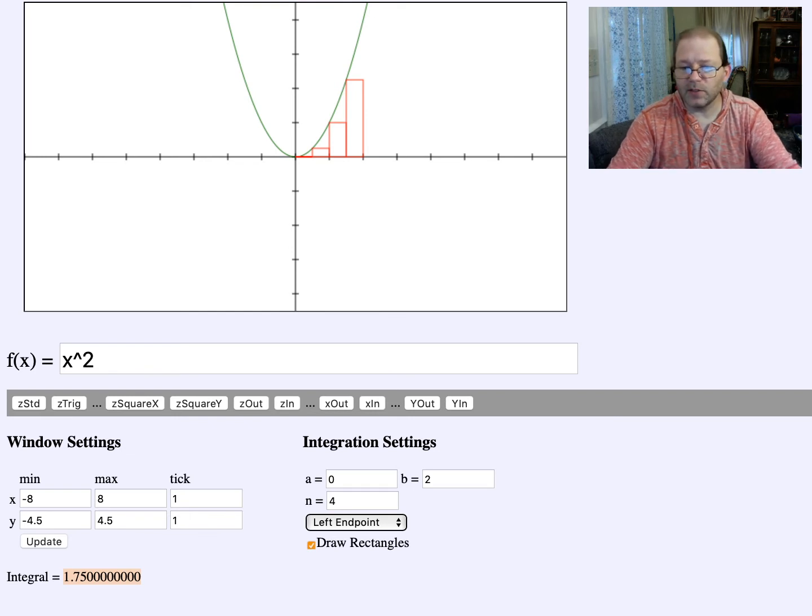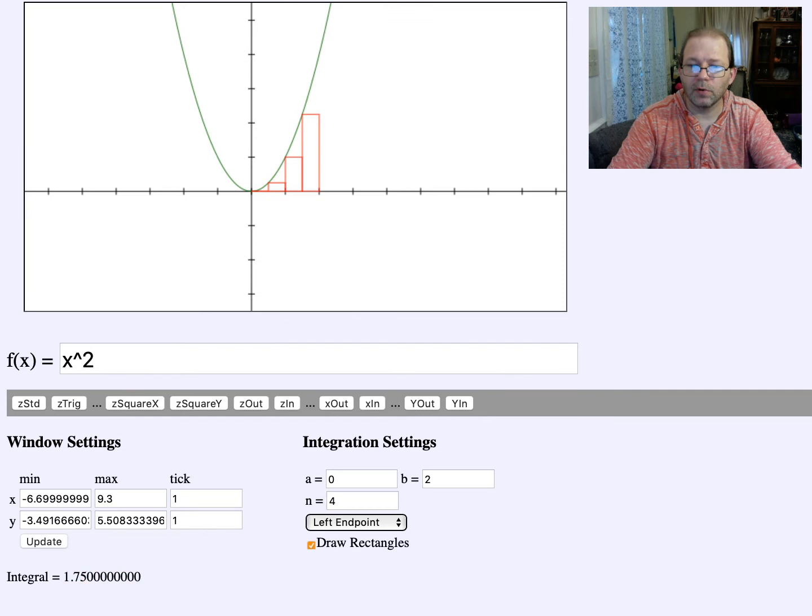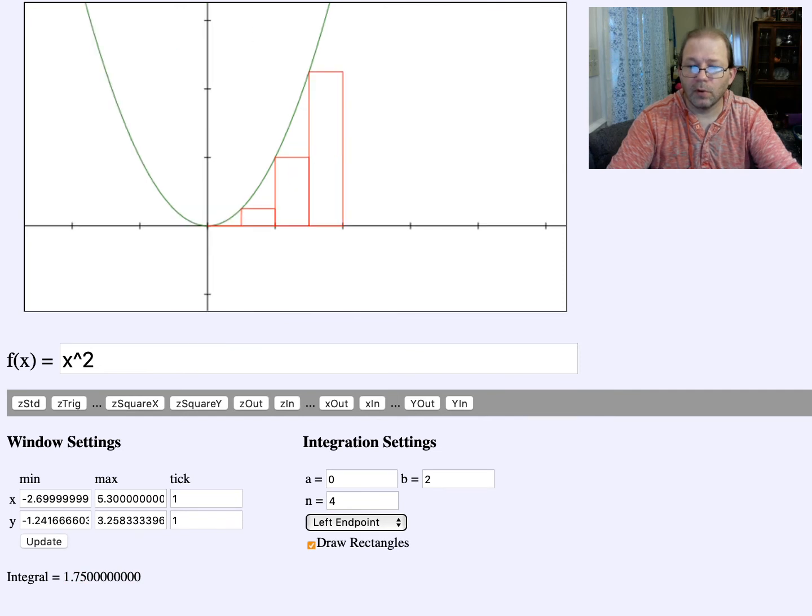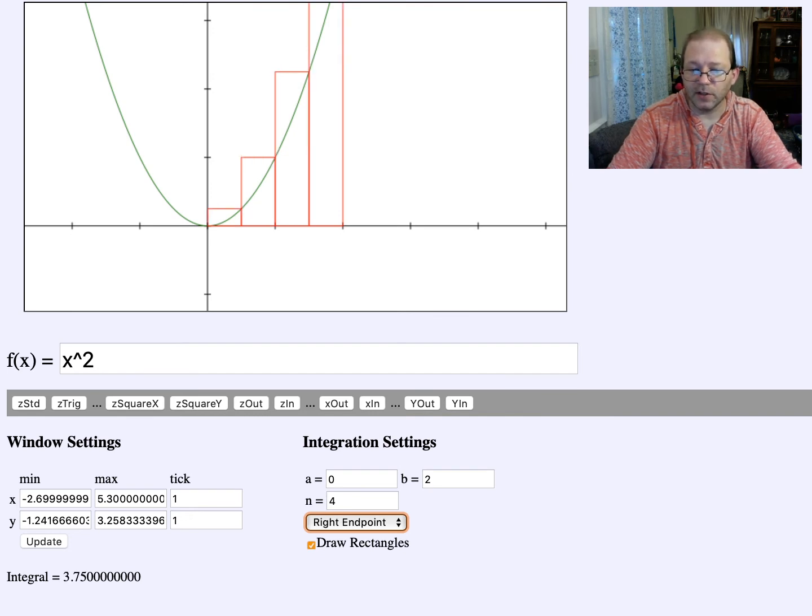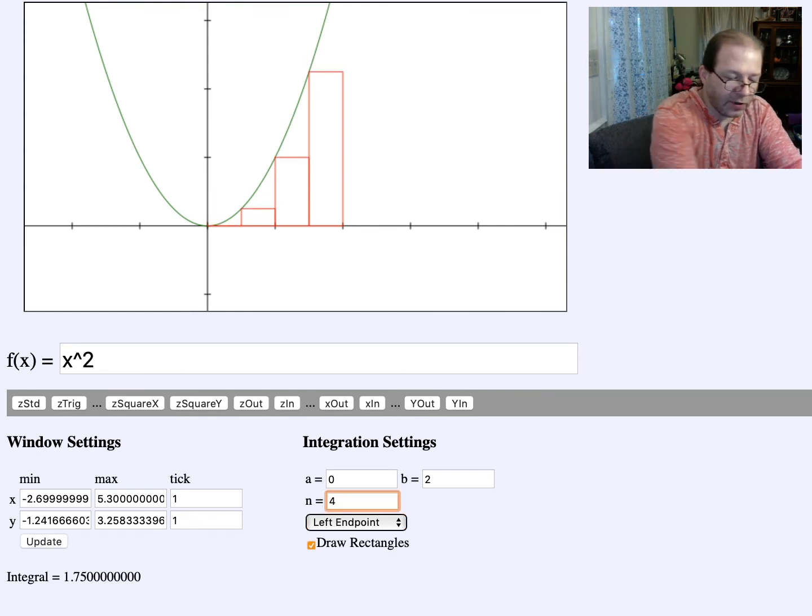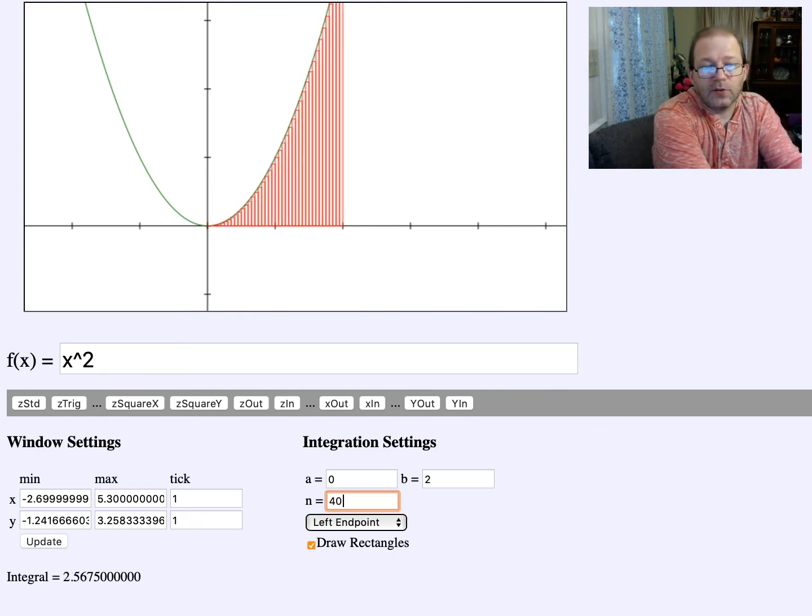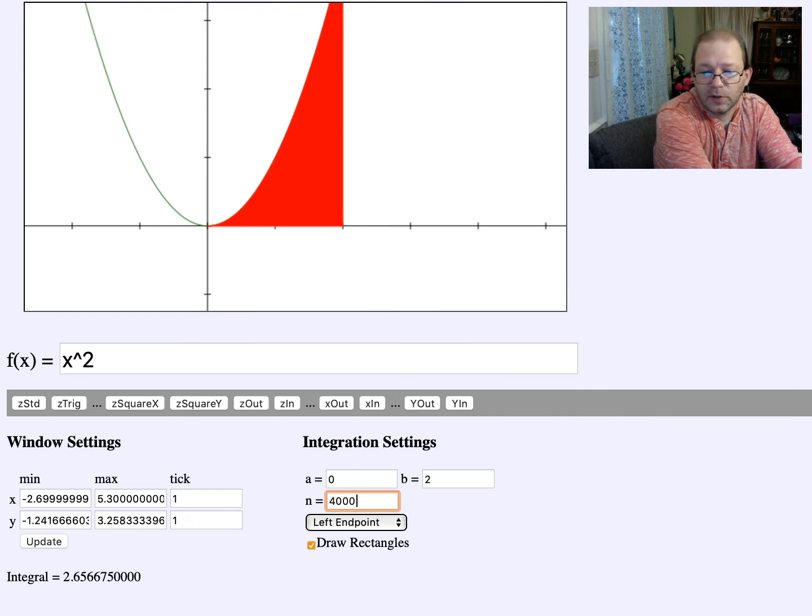To get a better approximation, there are different things we can do. Notice this is an undercount. If I switch to the right, it's going to count extra area and gives us something big. If I switch to using the midpoints, it gives us something that's a better approximation. But if I leave it on left endpoint and I use a lot more rectangles, we get a better approximation. And it looks like if I'm using 40,000 rectangles, it looks like 2 and 2 thirds is probably the exact area.